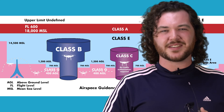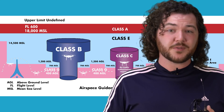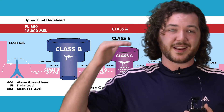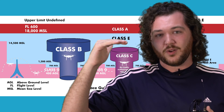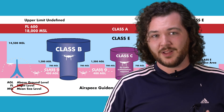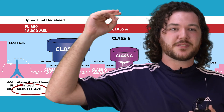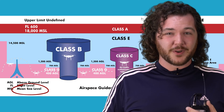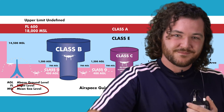Class A airspace is the easiest to understand, and it's the most consistent of the bunch. It starts at 18,000 feet MSL, or mean sea level, and the upper limit is 60,000 feet. It's a bit out of range for most remote drone pilots, so let's move on.